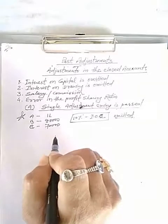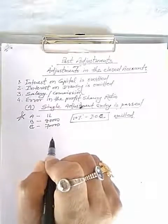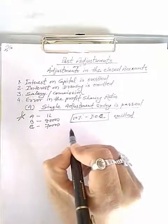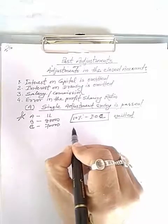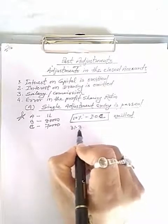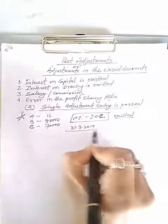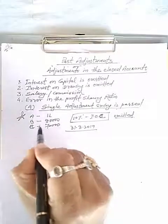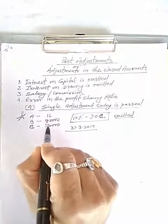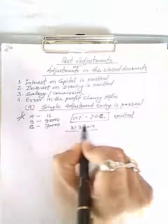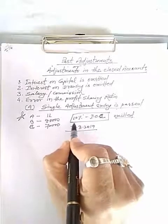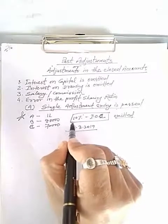Suppose their accounts are closed on 31st March 2019. The question says A, B, C are partners in a firm with interest on capital at 10 percent per annum omitted.